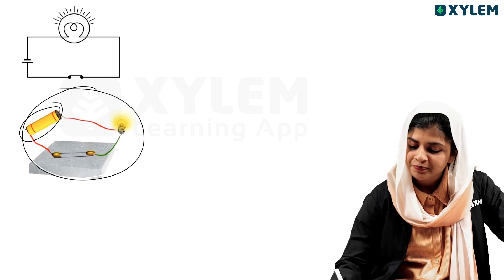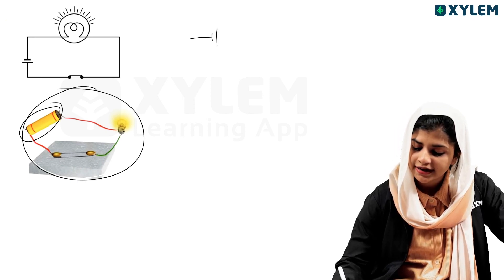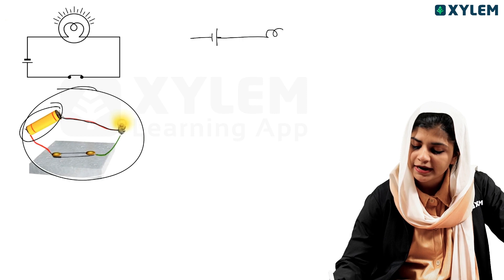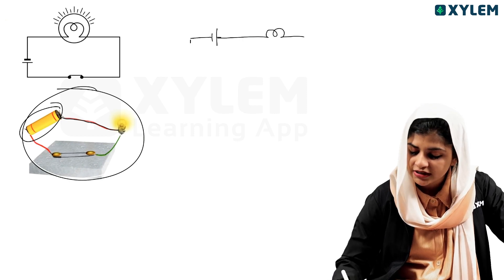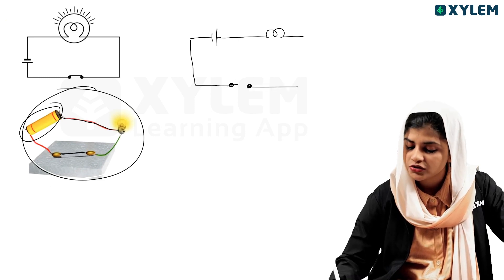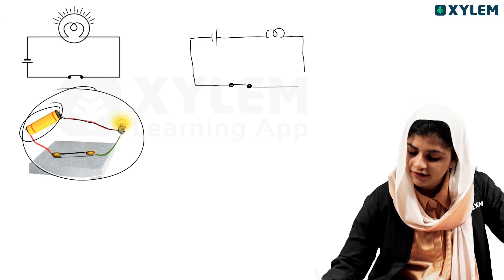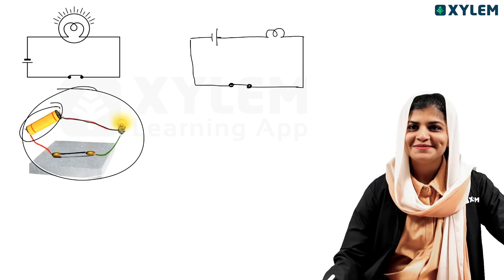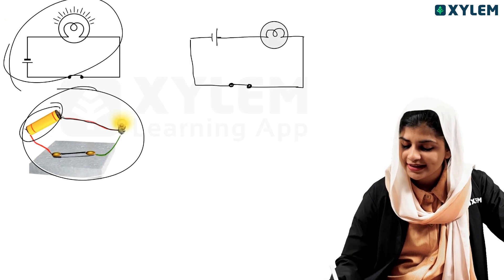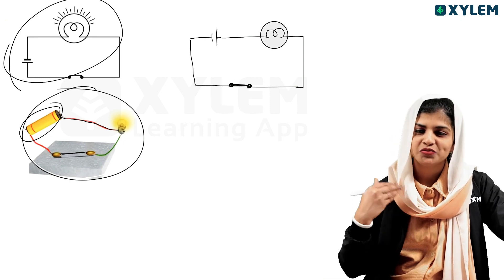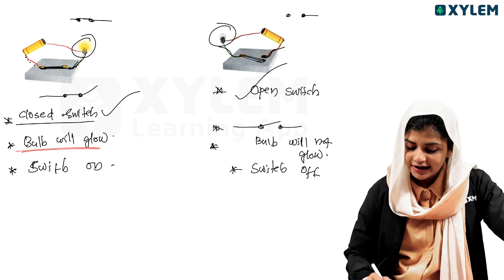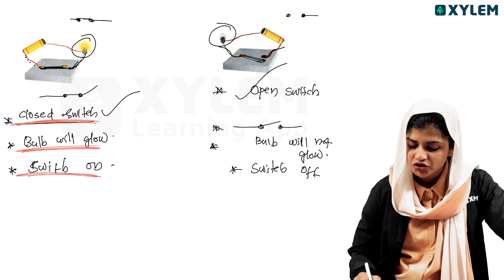The battery has a positive and negative terminal. From the positive terminal, the wire goes to the bulb. From the bulb, the wire goes to the switch. When the switch is closed, the circuit is complete. The bulb will glow when the switch is in the closed condition.